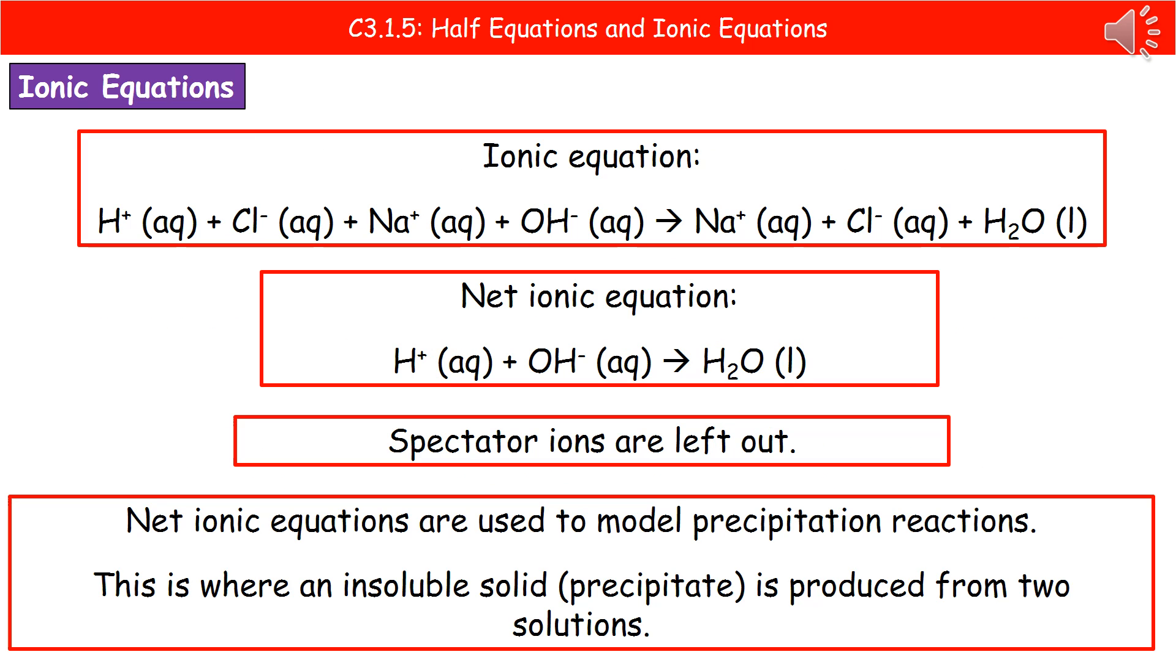So at the top, we've still got our complete ionic equation there just so that we can see it. When they ask you to write the net ionic equation, we leave out those spectator ions. So what we're going to do in this case is we're going to leave out the sodium ions and the chloride ions. So all you do is you ignore their existence and then rewrite it just with the ones that have changed.